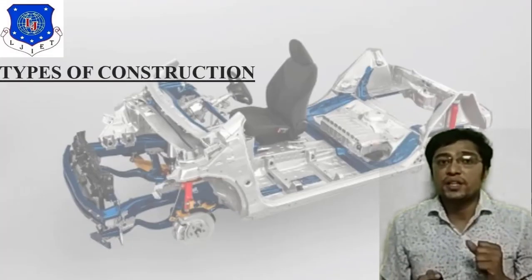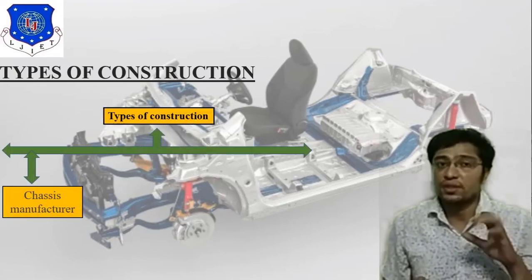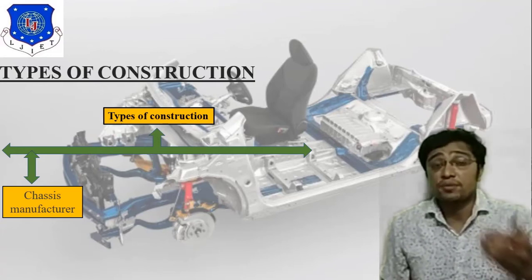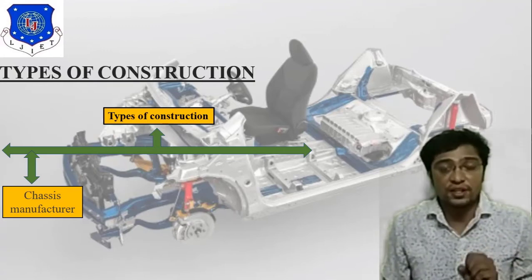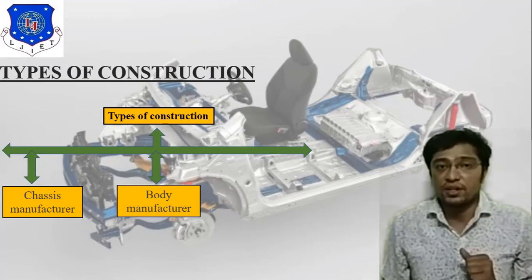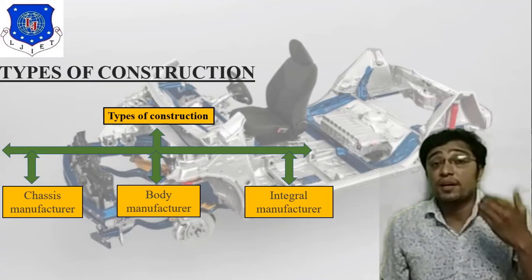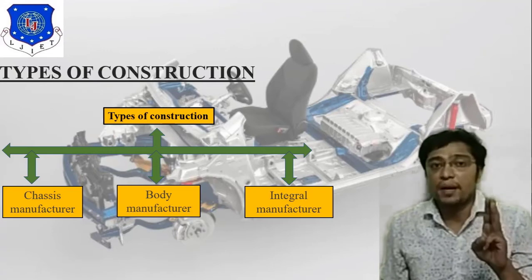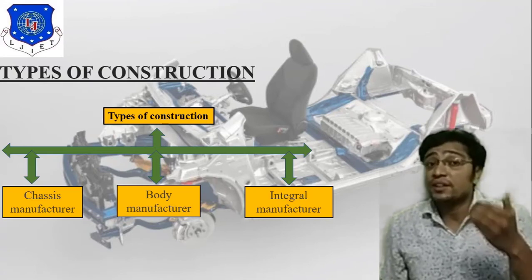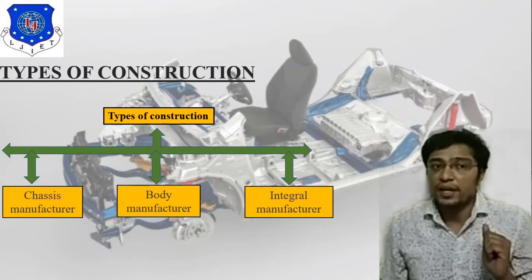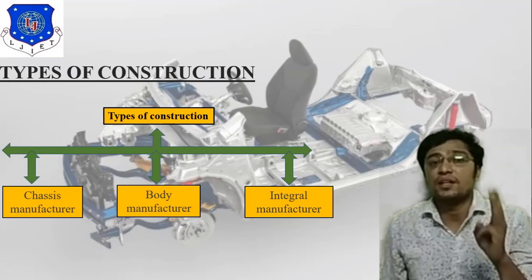In bus body there are various types of construction, or you can say various types of components we can use. The first and important one is chassis manufacturer, the second is body manufacturer, and the third is integral manufacturer. So in types of construction for bus body we need to focus on these three parameters: chassis manufacturer, body manufacturer, and integral manufacturer.